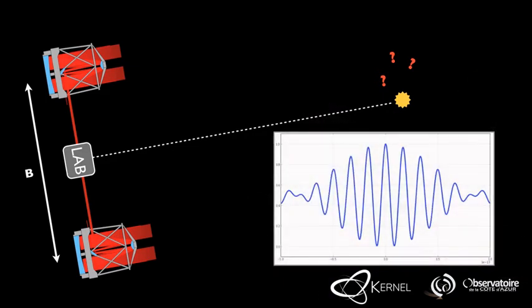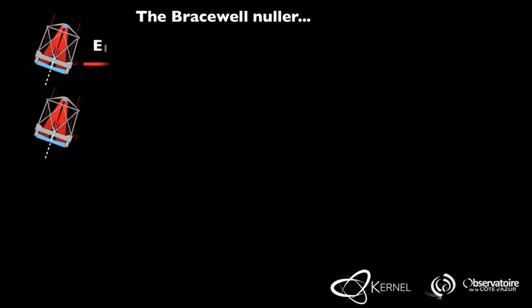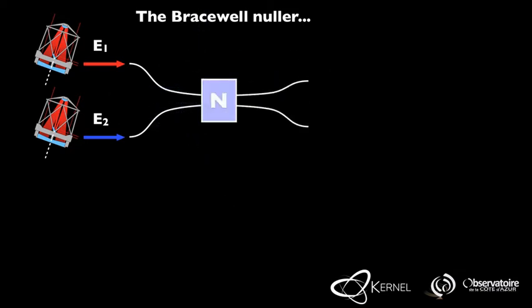If these conditions are verified, then thanks to the coherence properties of light it will be possible to observe interference fringes. To understand Bracewell's intention, it is useful to represent what happens to the electric field collected by the two observing stations. The two fields, labeled E1 and E2, represented by a red and a blue arrow, are coupled into a device called a nuller that makes it possible to overimpose the two fields.